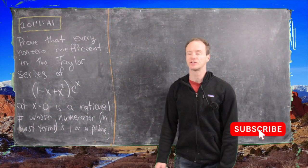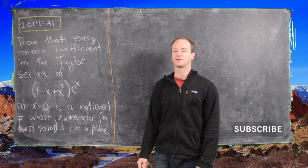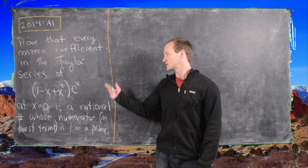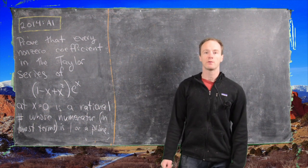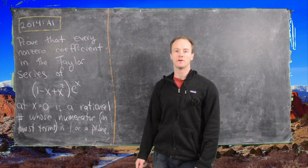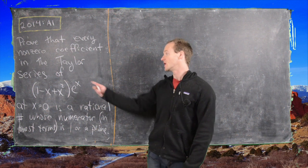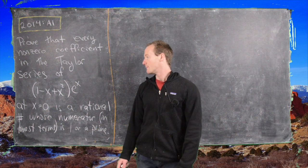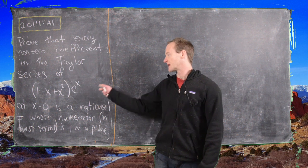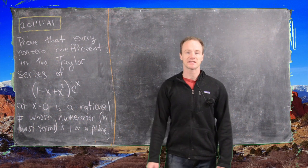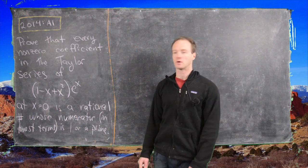In this video we're going to look at a solution to problem A1 from the 2014 Putnam exam. Let's look at the statement of the problem. We want to prove that every non-zero coefficient in the Taylor expansion of (1 - x + x²) times e to the x, based at x equals 0, also known as the Maclaurin series,